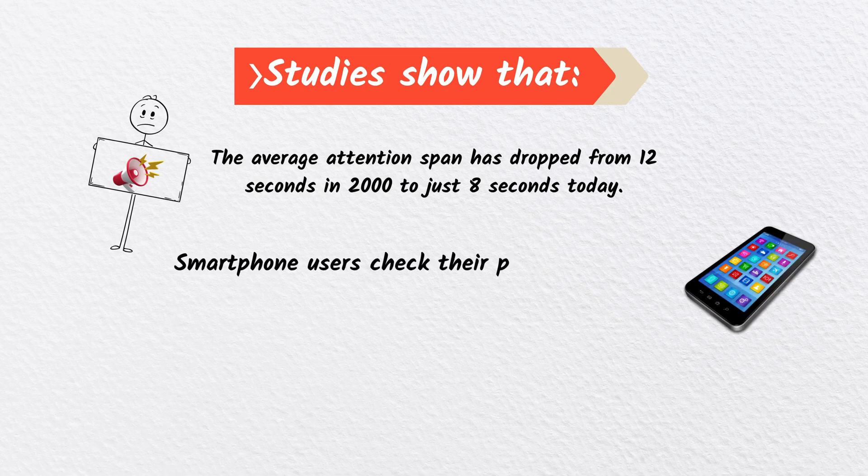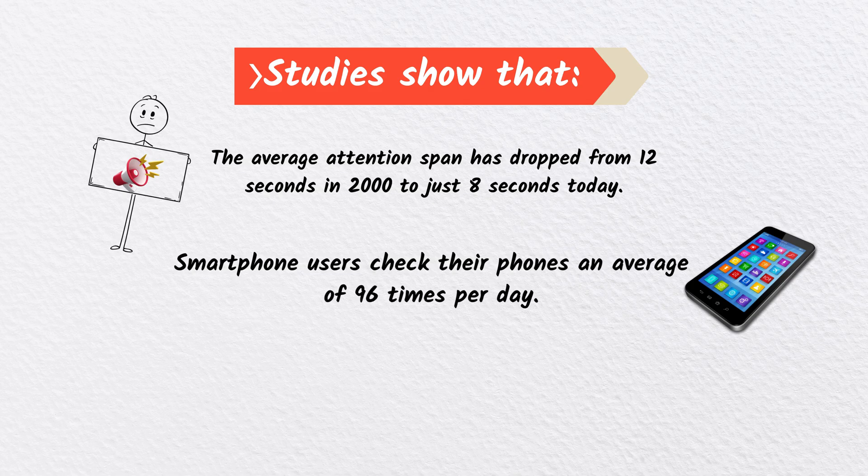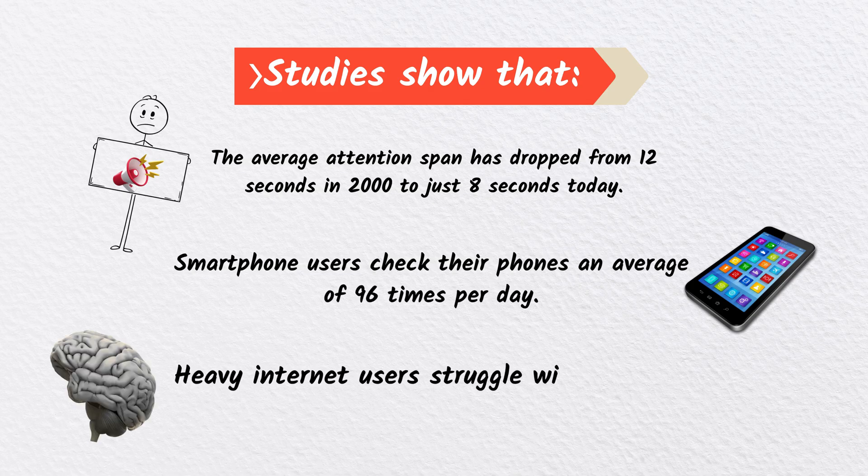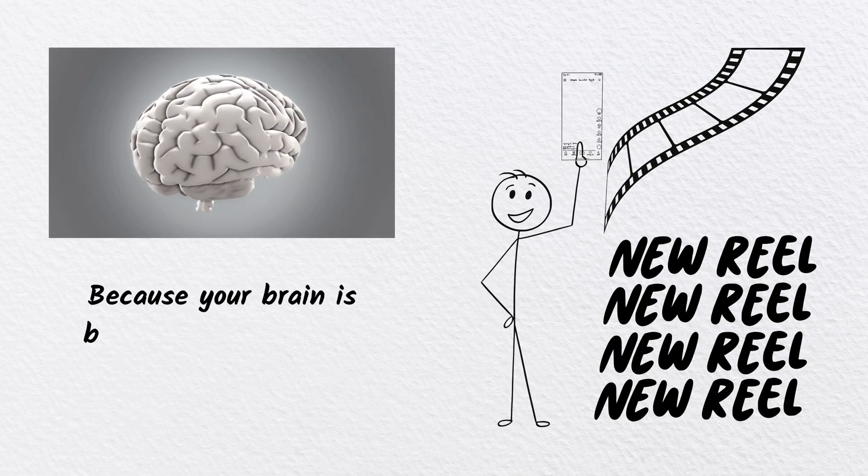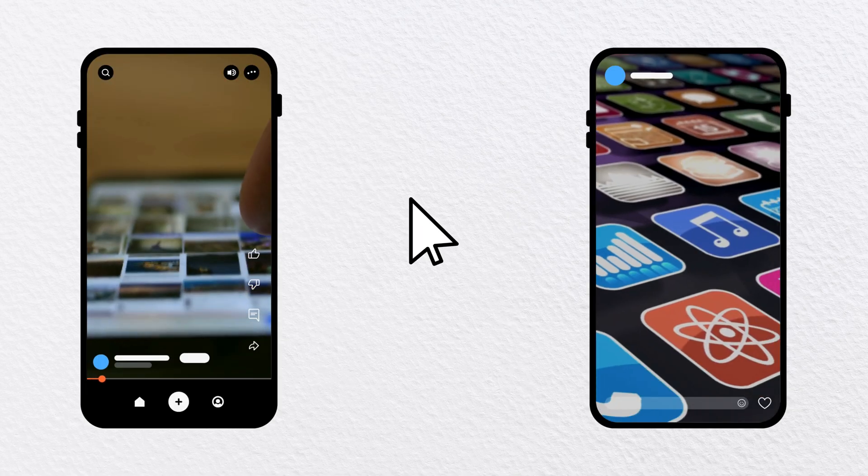Smartphone users check their phones an average of 96 times per day. Heavy internet users struggle with memory recall and deep thinking. Why? Because your brain is being trained to crave instant gratification.